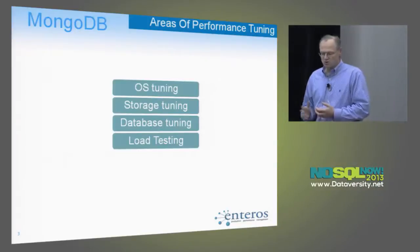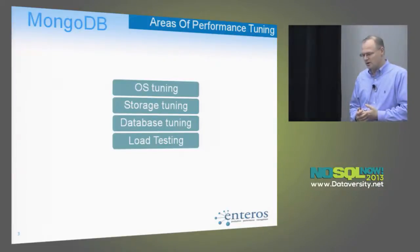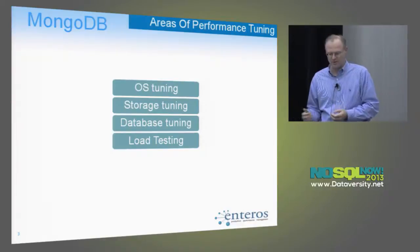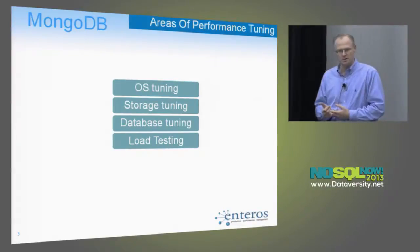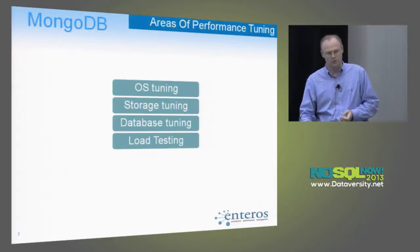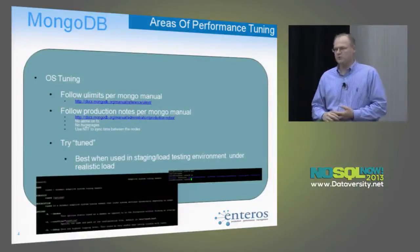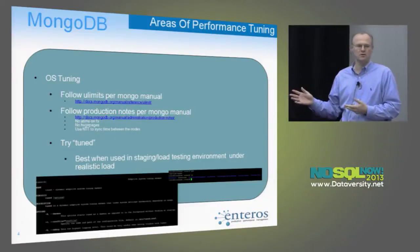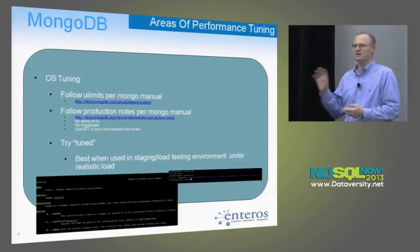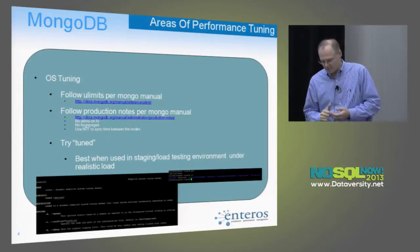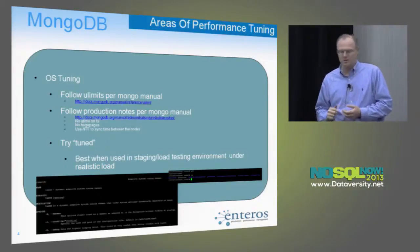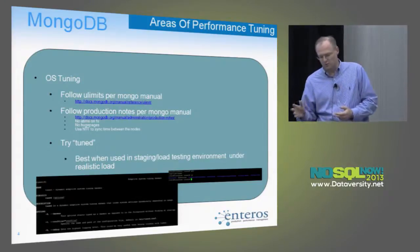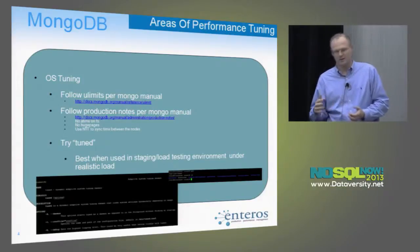It's very important to create a sandbox environment where you can test under a load very close to real production activity. Going through the areas, we can deal with the operating system tuning layer, storage tuning, database-level tuning, and load testing. There is a lot that can be done at the storage and database tuning levels. For OS tuning, in the MongoDB manual there is a ulimits document that tells you specifically what ulimits to set for production implementation.